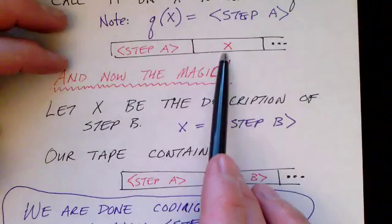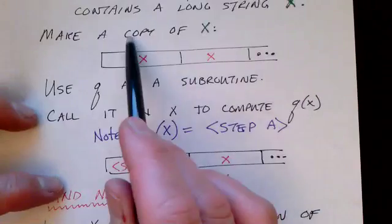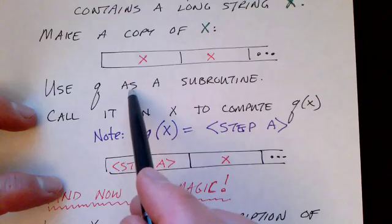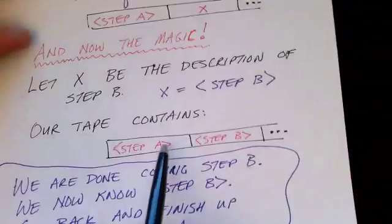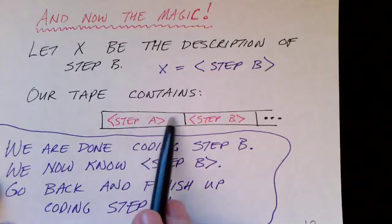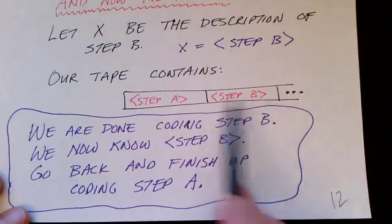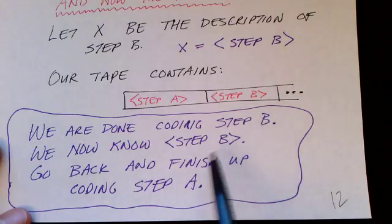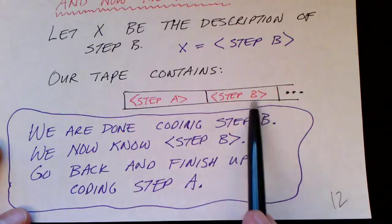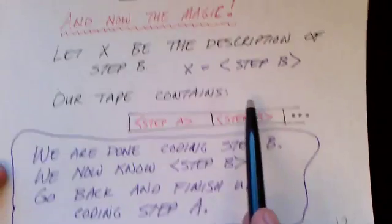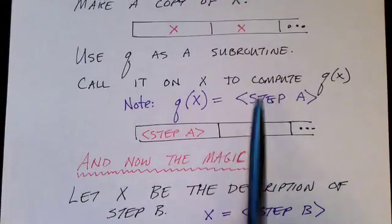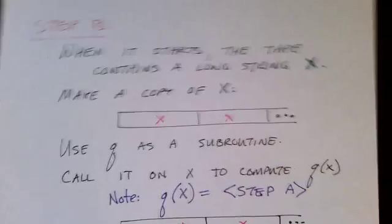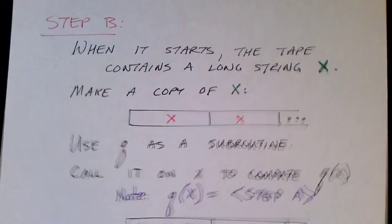As long as step A printed out a description of step B, these two steps — make a copy and call Q, plus a few things to shift things around — leave us with a tape that contains step A in the first part and step B in the second part. So now we're done coding step B. We know a description of step B; it's relatively short. We can now go back and finish up coding step A, since we know what step B is and therefore know what the string X is. That completes our description of how it's possible to create a Turing machine that leaves on the tape a description of that very Turing machine.